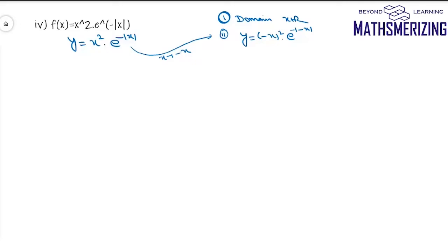If I replace x with minus x, I'll get the same function, which means this graph has a y-axis symmetry.